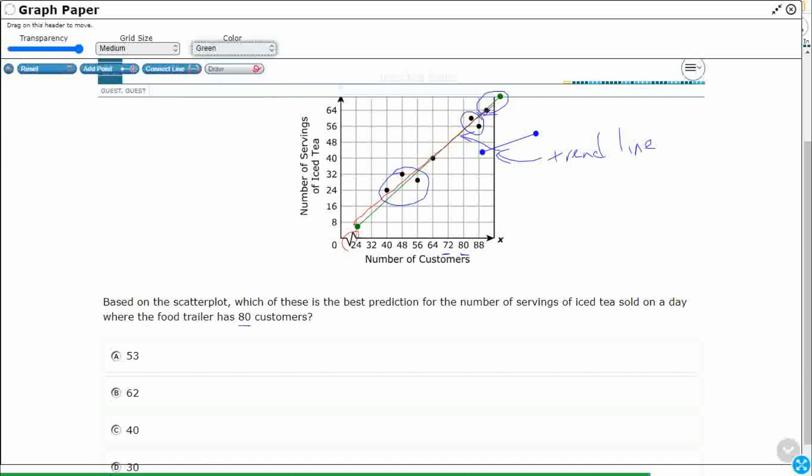So 53, so if I'm at 80, my 53 is going to be right around, let's see, that's 48, that is going to be 8, so that's going to be right around here, underneath there. So that's about my 53 right there. My 62, it's way high. There's my 62 right there. My 40, hmm, way down here. And then look at this, my 30. 30 is right down there. Because what we're looking for is, if we had 80 customers, where would that fall right there?